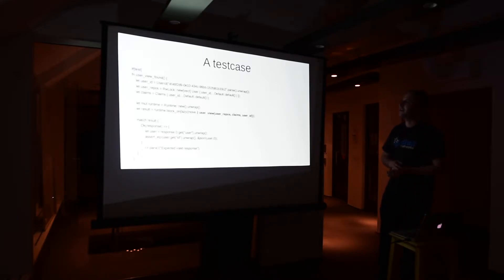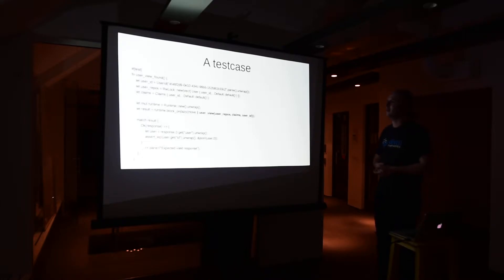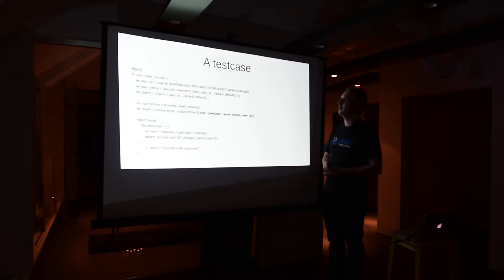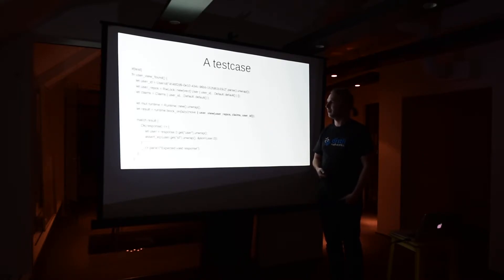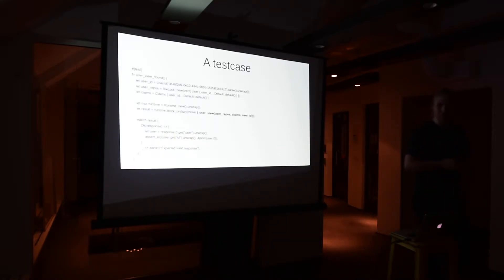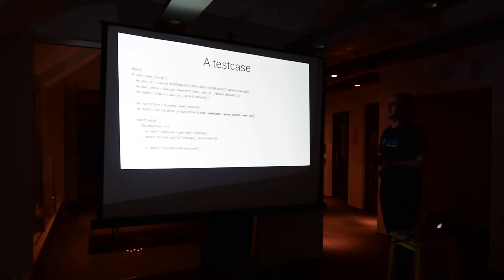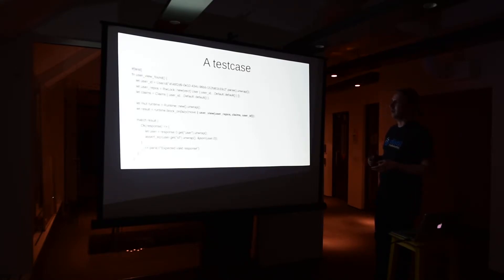We end up with test cases that look like this. We set up a repository which is a simple vector and put the user struct into it. We create a claims object representing our session and create a token around it, then simply call our method, get back a result, and assert any property we want about it. This structure makes it incredibly easy to test every single endpoint and provide everything that these methods require without relying on a single Warp-specific type.